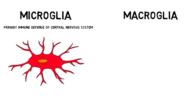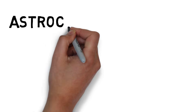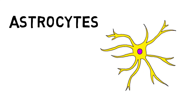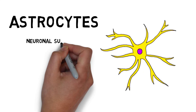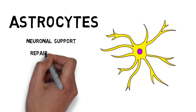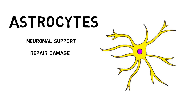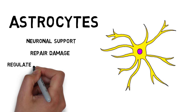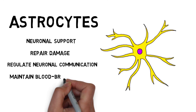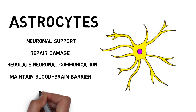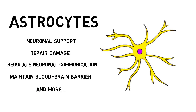The rest of the glial cells are considered macroglia. Astrocytes are star-shaped glial cells with many functions, which include providing nutrient support to neurons, helping repair damage to nervous system tissue, regulating communication between neurons, and maintaining the blood-brain barrier, which keeps potentially toxic substances in the blood from entering the brain.